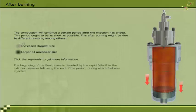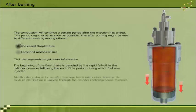The beginning of the final phase is denoted by the rapid fall-off in the cylinder pressure, following the end of the period during which fuel was injected. Ideally, there should be no after-burning, but it takes place because the mixture distribution is uneven through the cylinder. Heterogeneous mixture.